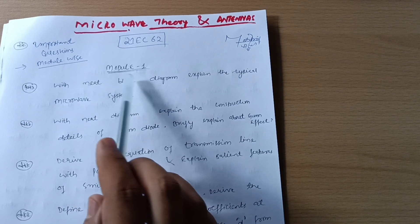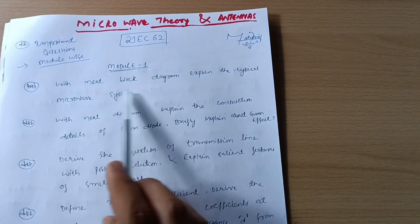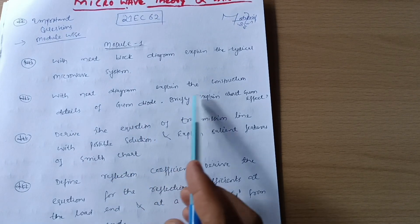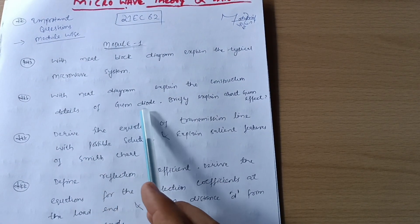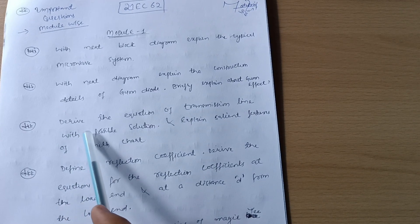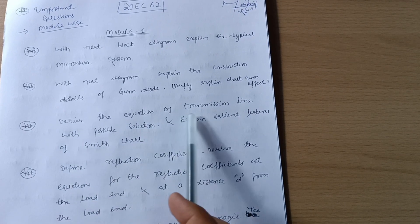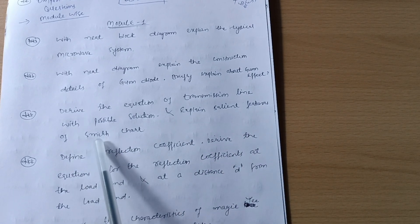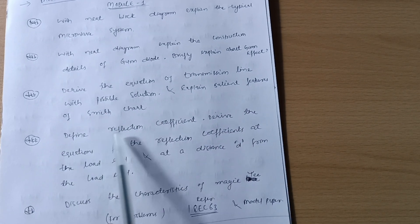Important questions from Model 1: With neat block diagram explain the typical microwave system. With neat diagram explain the construction details of Gunn diode. Briefly explain about Gunn effect. Derive the equation of transmission line with possible solution and explain salient features of Smith chart.